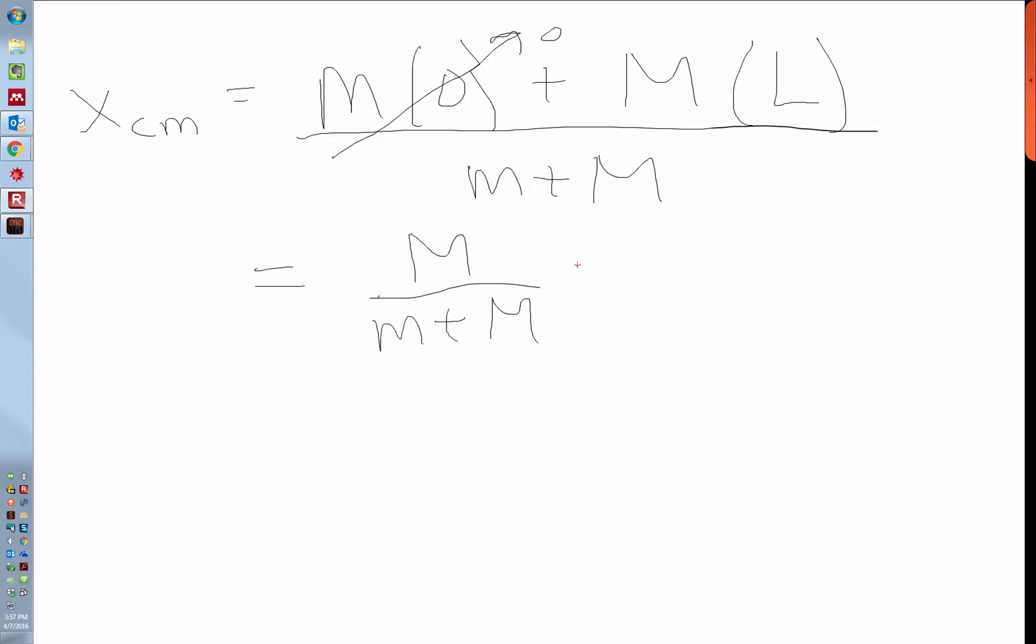Okay, so let's do that. And we're going to get then that the x center of mass is equal to the little m times where the little m is, which is 0, plus the big M. And let's say the length of the rod is L. And then we're going to divide it by m plus M. And that's the answer. This goes to 0, and we're left with the big M over little m plus big M times L.